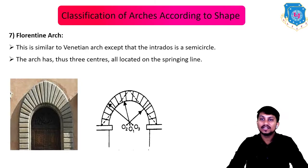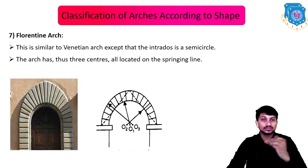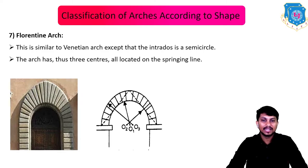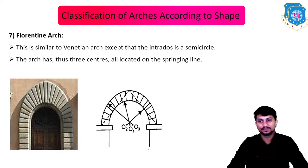Next is the Florentine arch. This is similar to the Venetian arch except that the intrados is semicircular. The arch thus has three centers — O1, O2, and O3 — all located on the springing line.